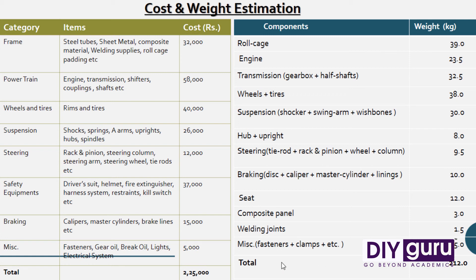On average, for a Baha buggy the cost should come around 3 to 4 lakh rupees, and the component weight should be around 200 kg on average. This is the process of doing your cost and weight estimation. I am attaching the PPT slide so you can keep it as a sample. Thank you, all the best for your Baha, and have a nice day.